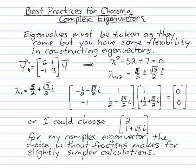Let's look at this example. Y prime equals [2, 1; -1, 3] times y. Linear system. The characteristic equation is lambda squared minus 5 lambda plus 7. If you apply the quadratic formula on this, you get 5 halves plus or minus root 3 over 2 times i.